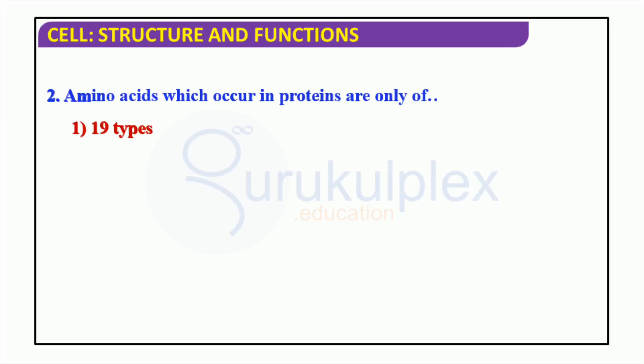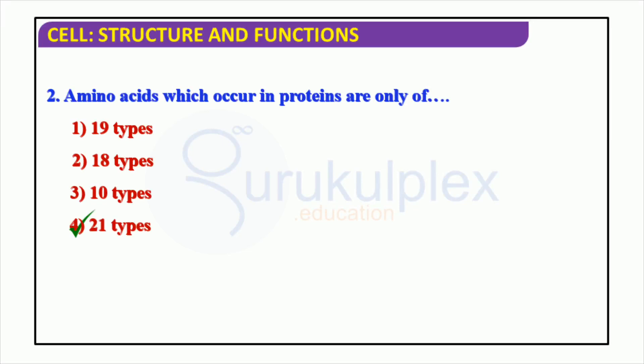Biomolecules are the basic components of life, and amino acids are one type of these. There are numerous kinds of amino acids, but researchers have identified 19 types that are present in proteins in our bodies. These 19 amino acids are categorized into various groups which depend on their biological and chemical properties. 19 amino acids may appear to be a small number, but these are responsible for the production of thousands of different proteins, each with their own essential role in the body and cells.